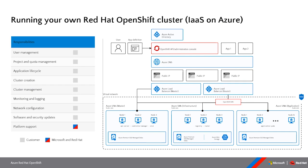If you were to run Red Hat OpenShift yourself using infrastructure as a service on Azure, there are a lot of moving parts. You'd end up managing supporting infrastructure, creating clusters, managing networking, monitoring, logging, patching, high availability, etc. This takes a lot of time and effort. You can offload some responsibilities to a managed service provider, but that adds to your IT budget and takes away some of the self-service benefits of a managed cloud platform.